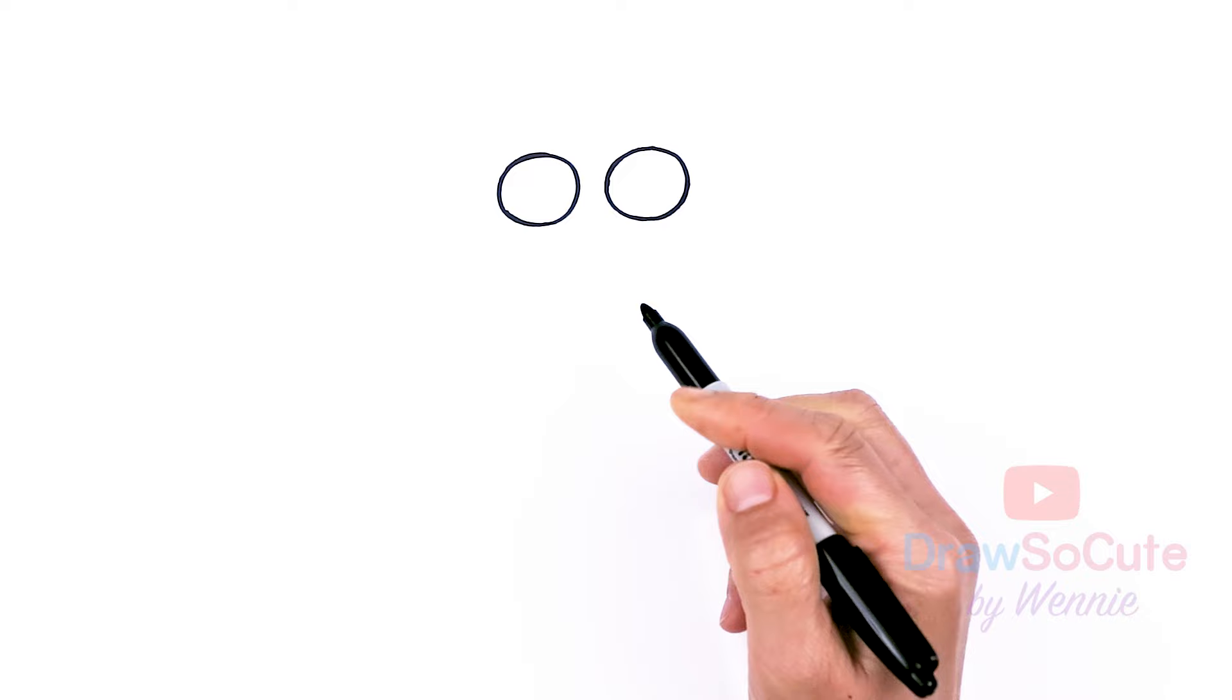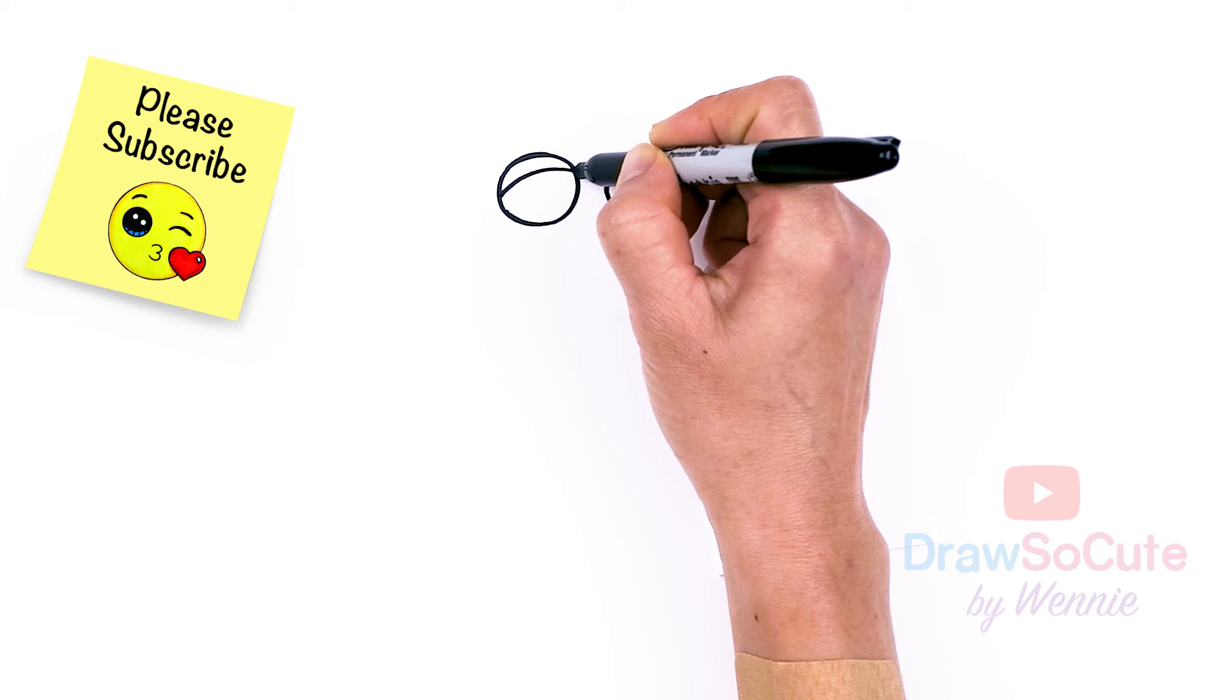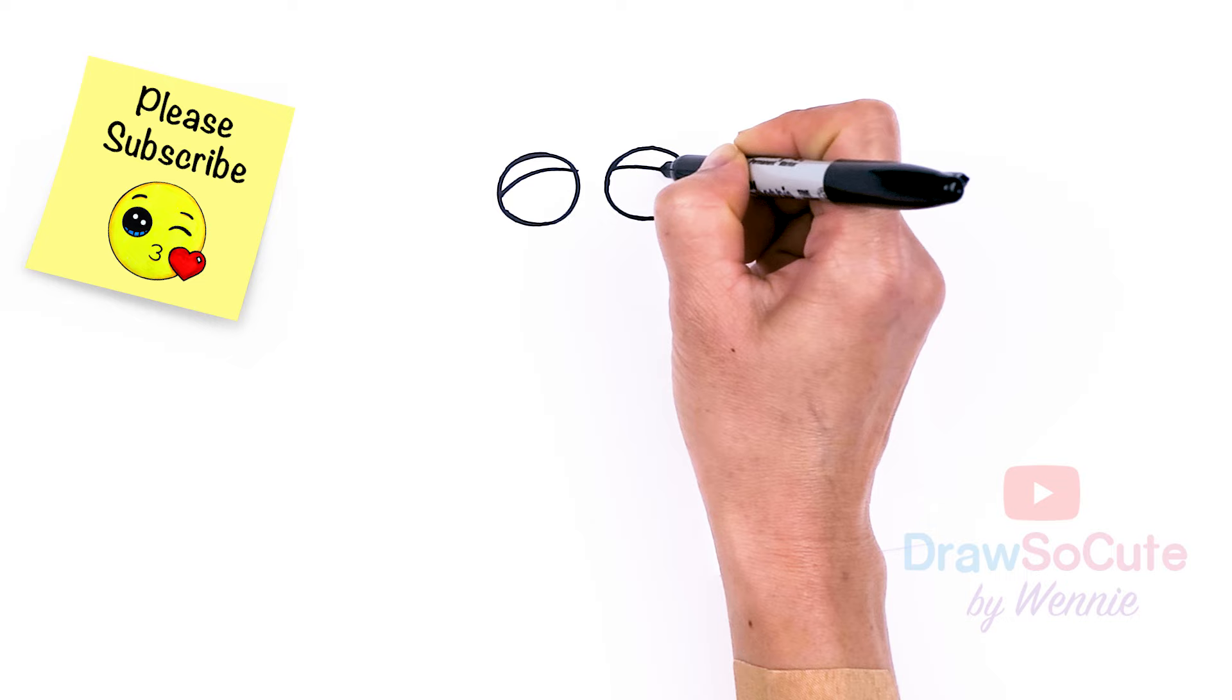So now my two big circles in. I'm going to come to the top area, about right here, and I'm just going to draw a slant curve coming down. So same thing on the other side. Just kind of curve it down to give Grimace that kind of sleepy eye look.